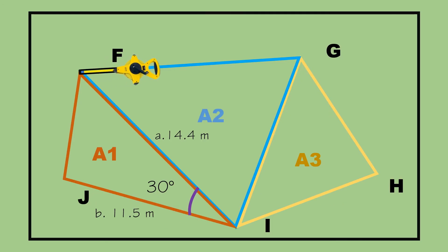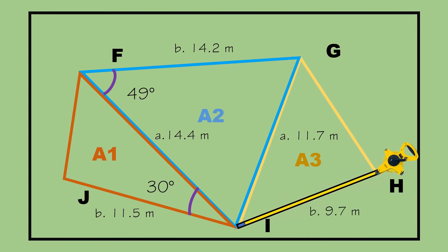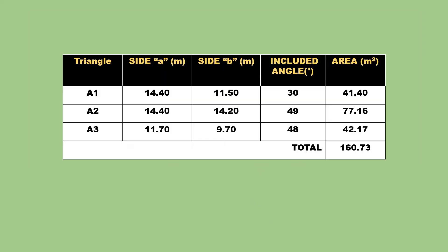Step 5: Repeat steps 3 to 4 for the second and third triangles of the polygon. To determine the whole area of the polygon, take the summation of areas of A1, A2, and A3. The area of A1 is 41.40 square meters, A2 is 77.16 square meters, and A3 is 42.17 square meters. The total area of the polygon is 160.73 square meters.